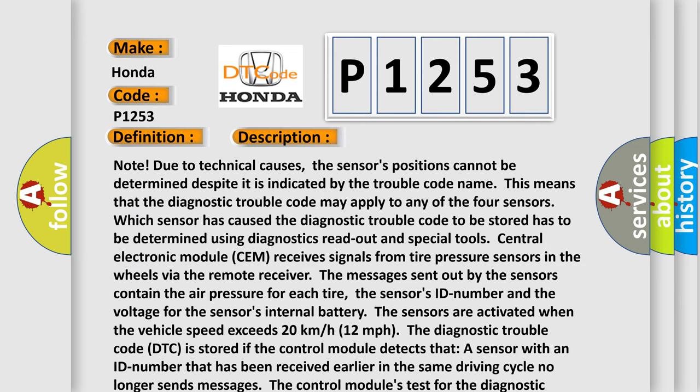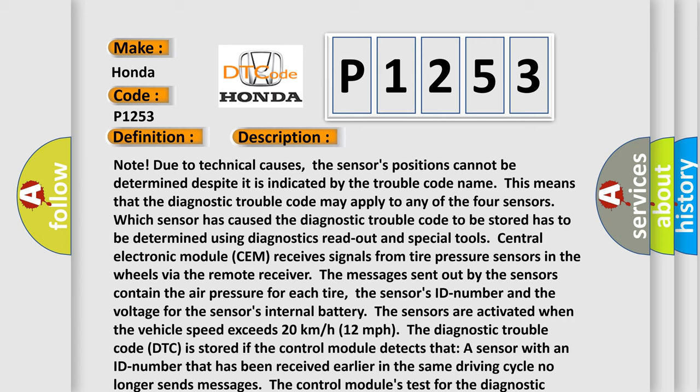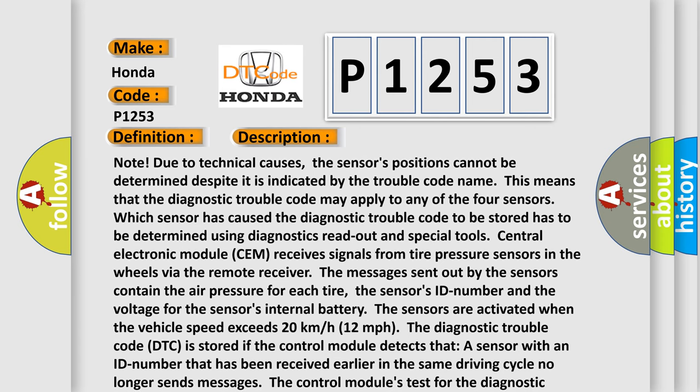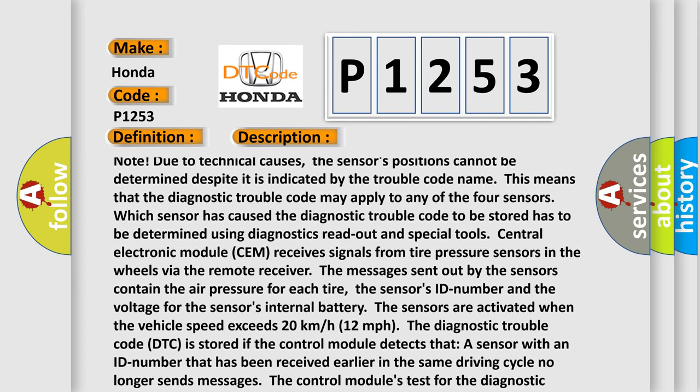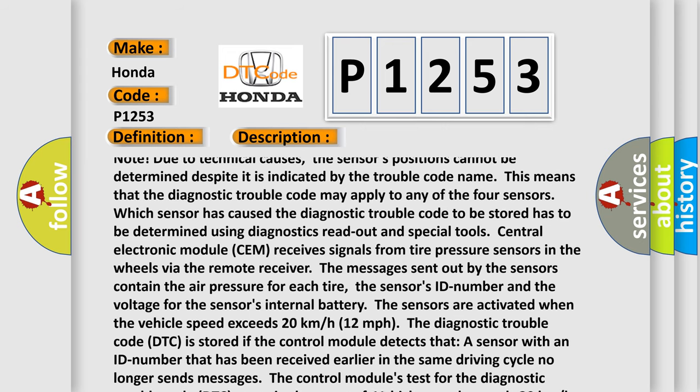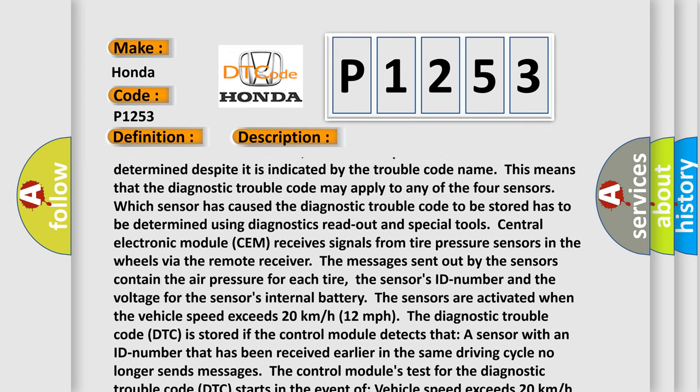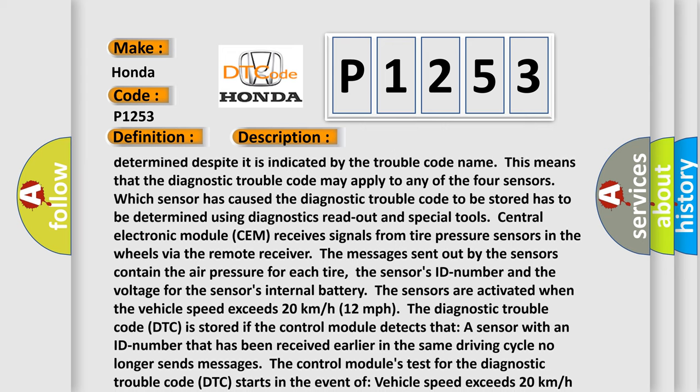Note: Due to technical causes, the sensors' positions cannot be determined despite it is indicated by the trouble code name. This means that the diagnostic trouble code may apply to any of the four sensors. Which sensor has caused the diagnostic trouble code to be stored has to be determined using diagnostics read-out and special tools. Central electronic module CEM receives signals from tire pressure sensors in the wheels via the remote receiver.